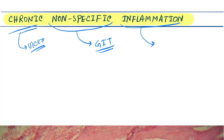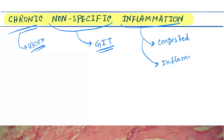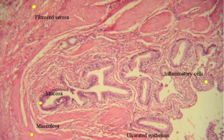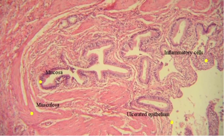The features of inflammation include congestion of the blood vessels — that is, the capillaries are congested. Next are inflammatory cells. Let's see the histological pictures.